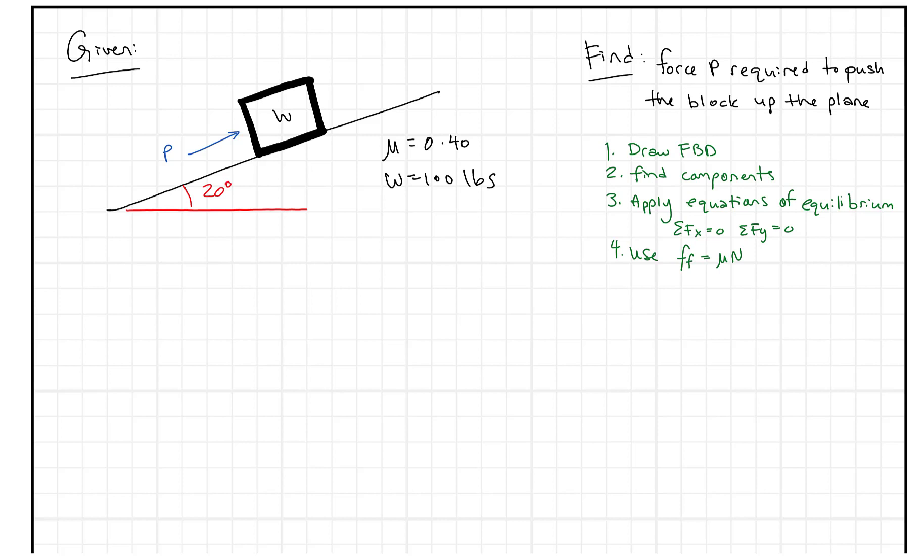So we're given a couple things. We're told the plane's at an angle of 20 degrees, the coefficient of friction mu is 0.40, and the weight of the block is 100 pounds.